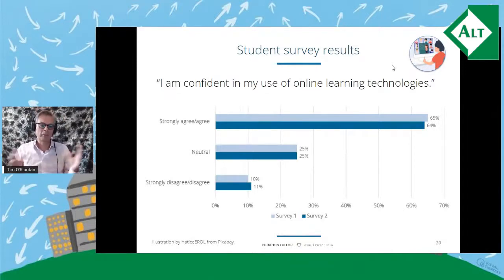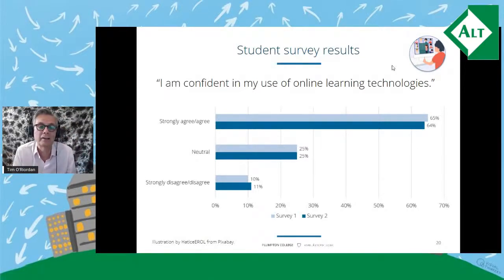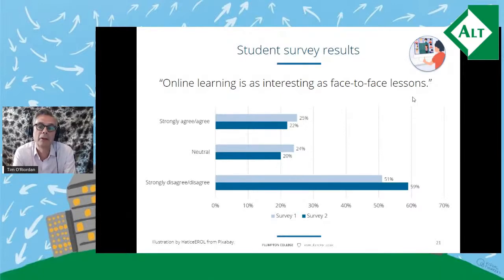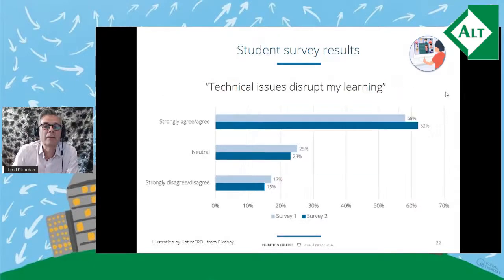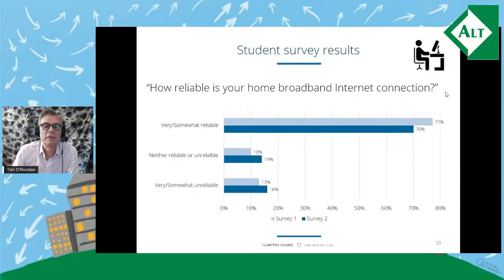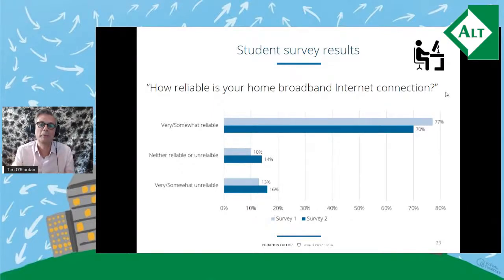The surveys asked a number of questions. Comparing survey one and survey two, there was very little difference overall. Most students said they were confident in using online learning technologies — about 65 percent — but only a quarter found online learning as interesting as face-to-face lessons. Significantly, around 60 percent agreed that technical issues disrupted online lessons, and around 15 percent said they did not have access to a reliable network connection — those last two may well be connected.